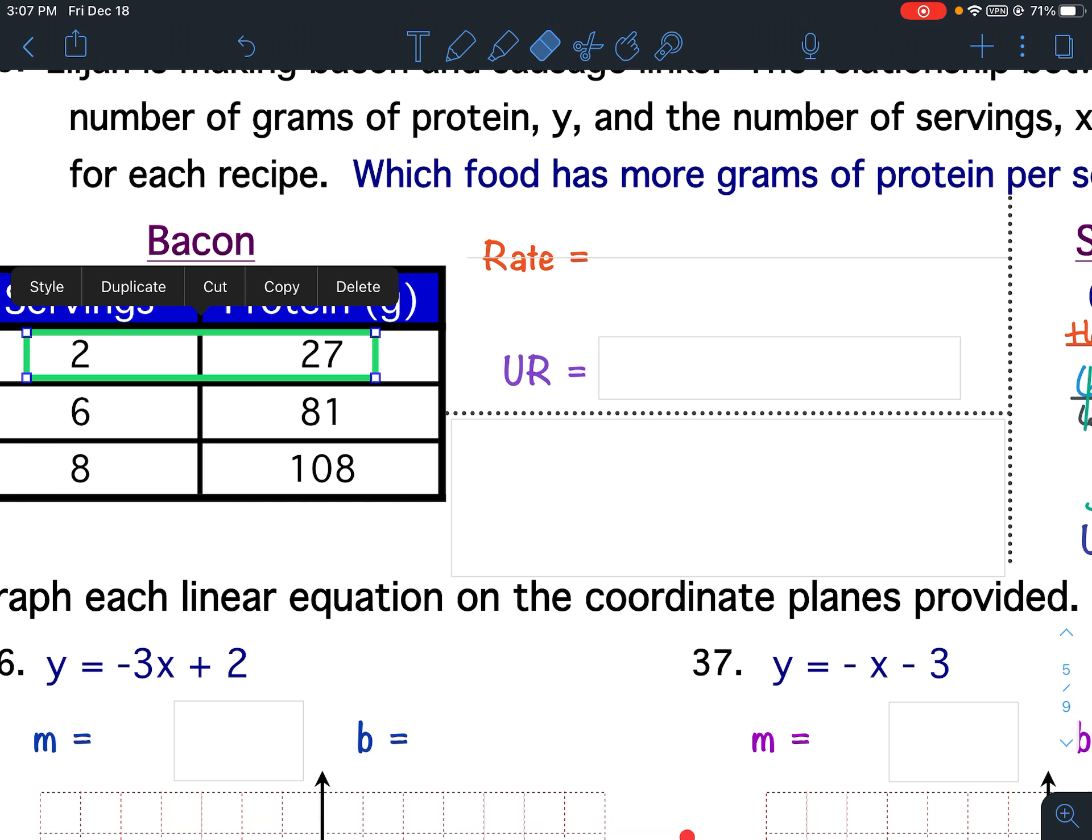You can use any one you want, but I like to use the easier numbers. To set up the rate, I'm going to do grams of protein over servings. So 27 is my grams of protein and two servings.